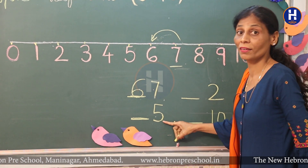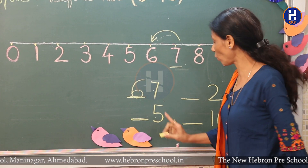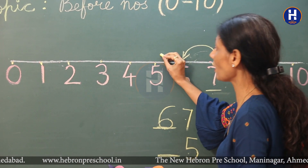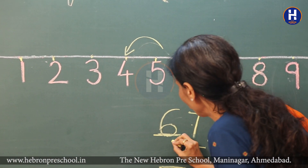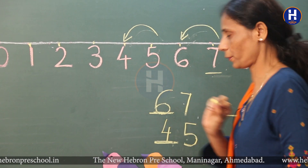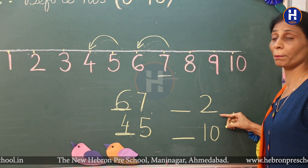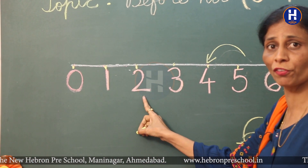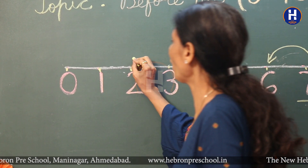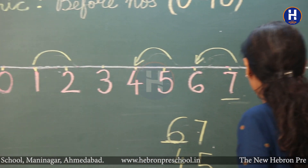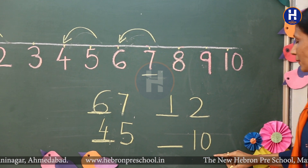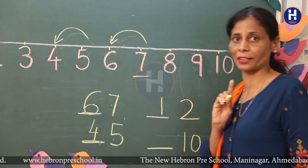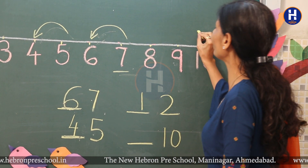Now which number is this? Yes, number five. What number comes before five? Five ke before kya aata hai? Yes, number four! Now which number is this? Number two. Which number comes before two? Yes, number one! Now which number is this? Number ten. Which number comes before ten? Ten ke pehle konsa number aa raha hai? Yes, number nine! Very good, children.